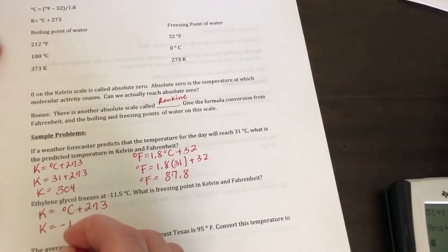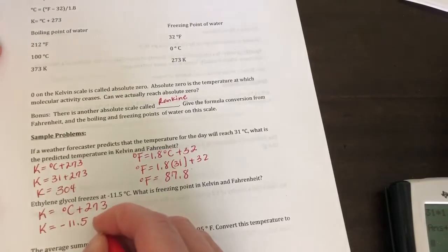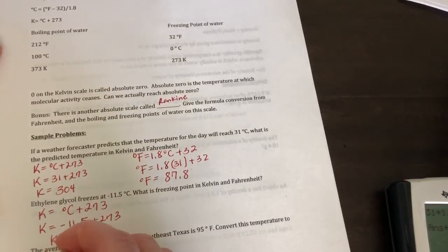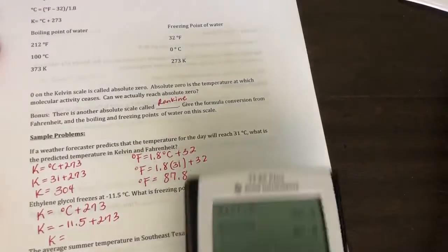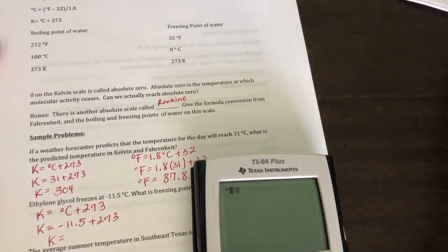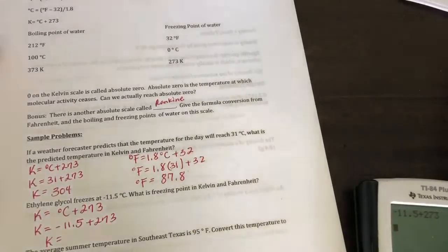So we take the negative 11.5 plus 273. And then we're going to put it in a calculator. So negative 11.5 plus 273 comes out to be 261.5.